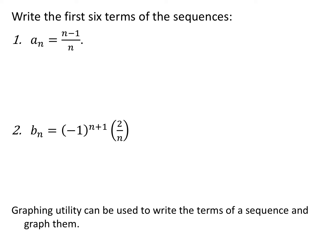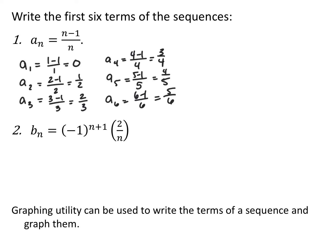So writing out the first six terms of a sequence: if a general term or an explicit formula is given to you, you just start plugging in starting with n equals 1, all the way up to however many terms you want. So for example, this first one: a sub n equals n minus 1 over n. If I want to find the first six terms, first I would plug in 1 — 1 minus 1 over 1 would be 0. Then plug in 2 — 2 minus 1 over 2 would be 1 half, so on and so forth all the way up to 6. Most of the time you can probably pick up the pattern, so you may not need to plug in every single time.